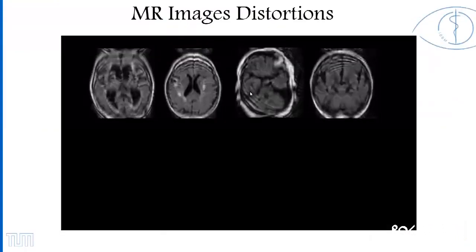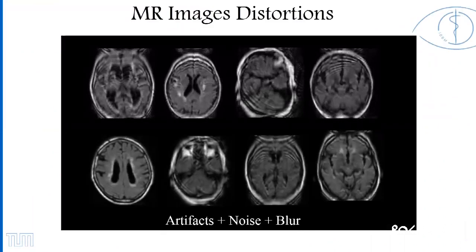Artifacts, blur, and noise are common deteriorations degrading MRI images during the acquisition process. As shown here, the deterioration severely affects the understanding of anatomy and relational structure for the radiologist. Furthermore, for MRI sequences, it is a challenge to achieve a balance between resolution, signal-to-noise ratio, and acquisition time. Considering the limited MRI resources, we proposed a novel graph-based convolutional network for MRI enhancement.